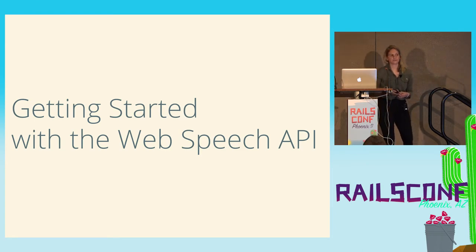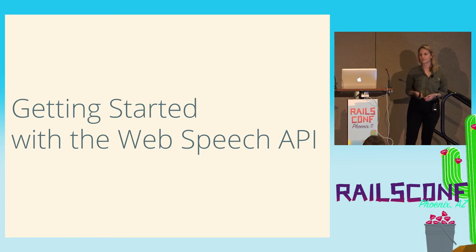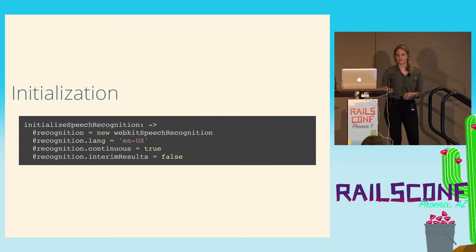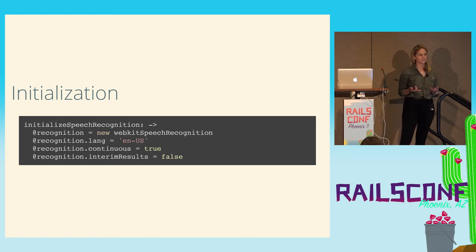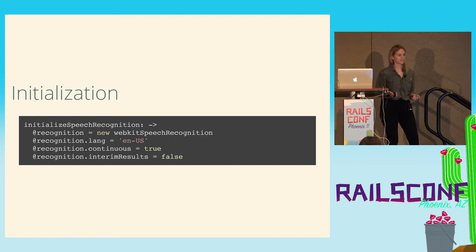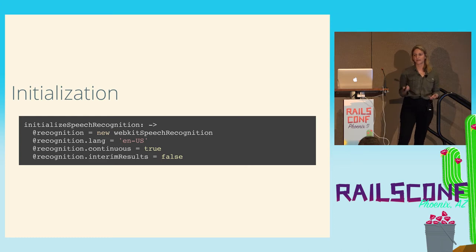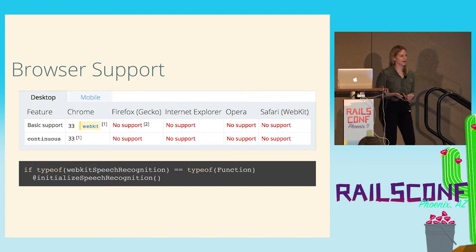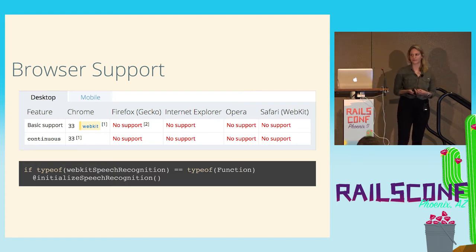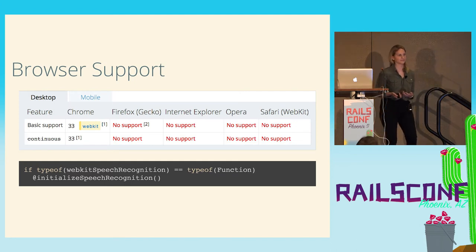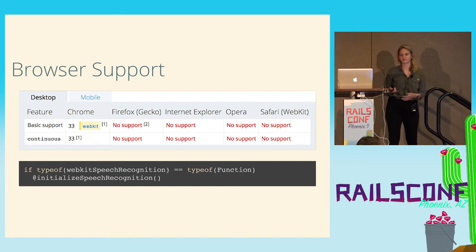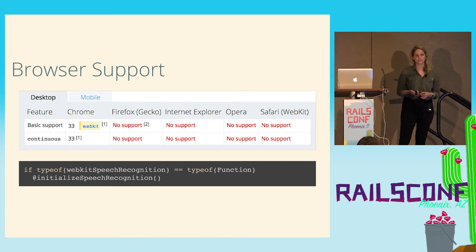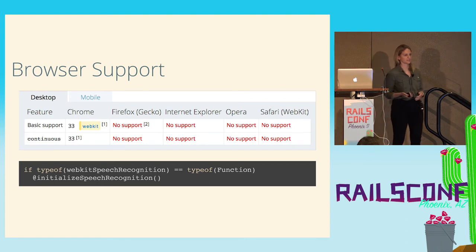Now that you've seen how we utilized voice dictation with our warehouse associates, I want to talk about how you can get started with the Web Speech API on your own. Here's a bit of CoffeeScript showing how to initialize the Web Speech API. The really cool thing about this API is that there's no external library you need to pull in — it's available as part of the JavaScript language if you're using the Chrome browser. It's really just as simple as initializing the WebKit speech recognition. It's only available in Chrome, which is why internal tools make a really good candidate for using the Web Speech API since we can fully control our users' browsers. It probably wouldn't be the best solution for something customer-facing where you have to support every browser.